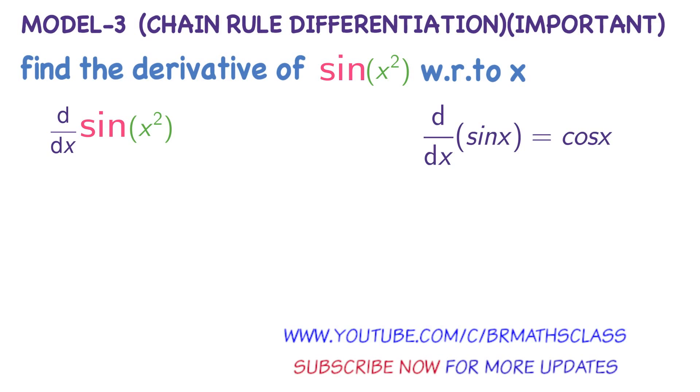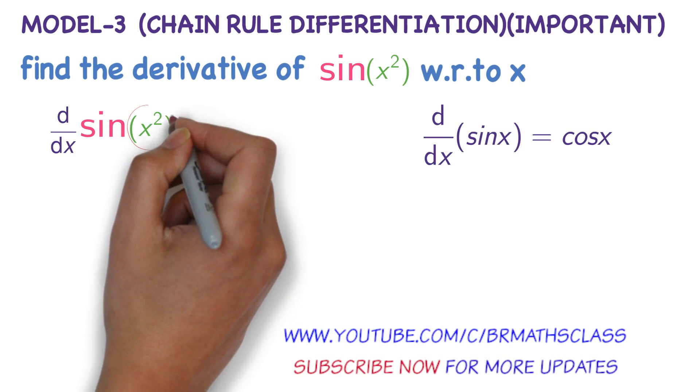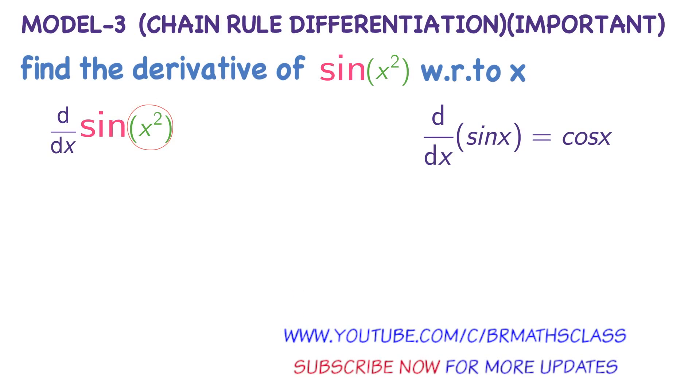The derivative of sin(x) is cos(x). So you take x² as x. Now how does it look? It looks like the derivative of sin(x). The derivative of sin(x) is cos(x).